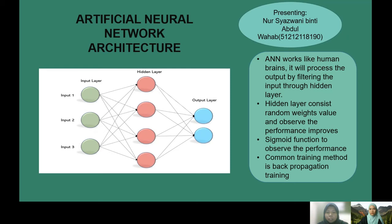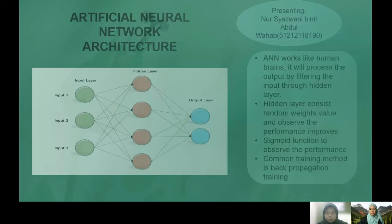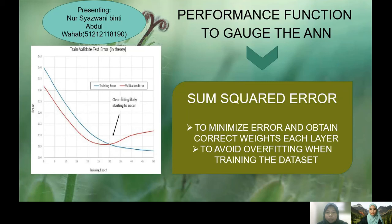The common training method for ANN is backpropagation, which improves the training dataset and gives accurate results. A mean square error (MSE) performance function can be used to minimize error and obtain correct weights for each layer. MSE also helps avoid overfitting. Overfitting occurs when the ANN learns the training dataset too well, causing large errors when processing new data because the ANN has memorized the training examples rather than generalizing. That's all from us — thank you.